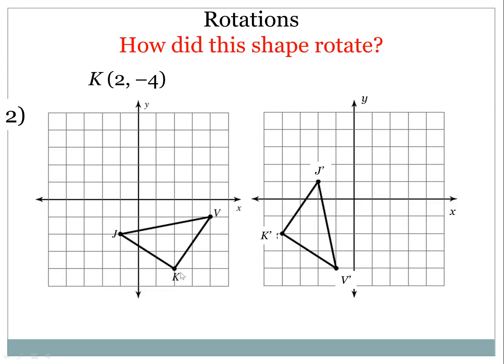So point K originally is 2 comma negative 4, and in the second graph, that point changed to negative 4 comma negative 2. So this is slightly different. They did change places again, but I see that instead of the sign of y changing, it's the sign of x that changed.